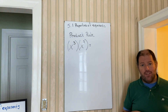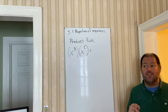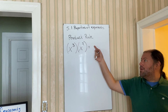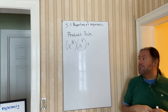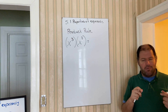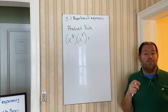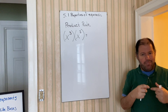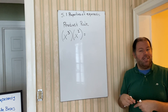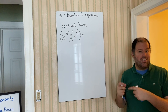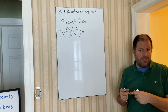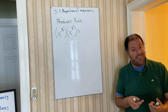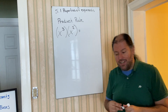The next topic we're going to focus on is learning the different properties, now that we went over the definition. The first property I want to introduce is something called the product rule. The product rule says if you're multiplying two of the same base, we can simplify by keeping the same base and just adding the exponents. The first thing you have to do is recognize what the bases are — that's what we talked about in the definition work.